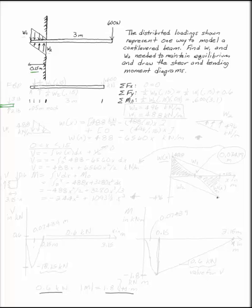I want to know what W1 and W2 are to maintain equilibrium, given that the loadings are triangular, and I want to know what the shear and bending moment diagrams look like.